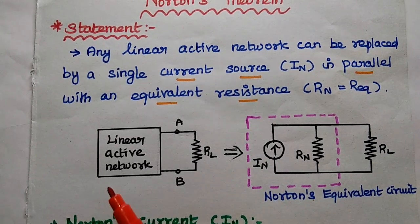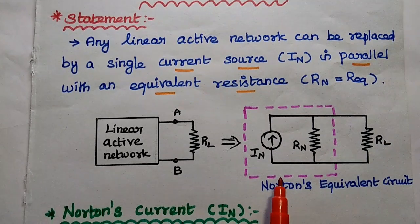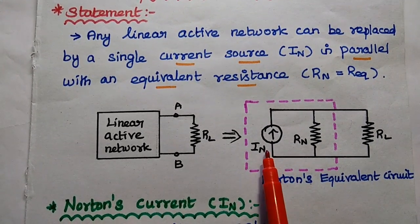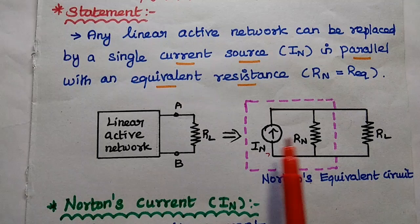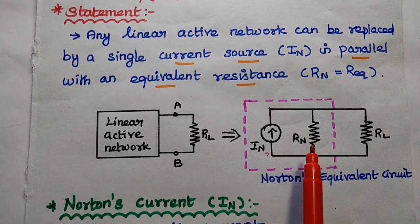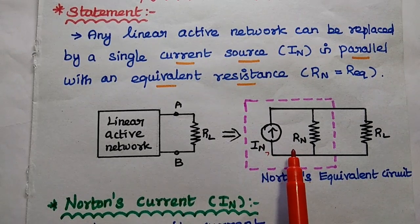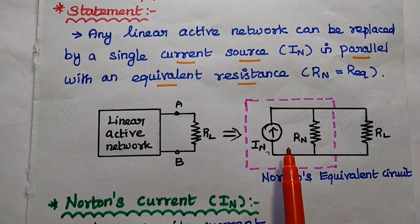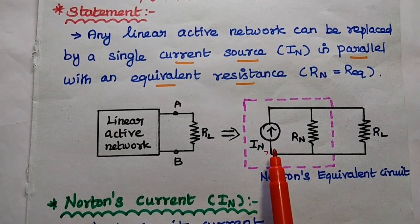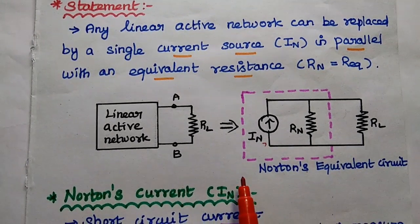Any complex network can be simplified using this Natan's equivalent circuit. We need to find out Natan's current and the Natan's equivalent resistance by using network analysis methods like nodal analysis, current division rule, and voltage division rule. This is Natan's theorem.